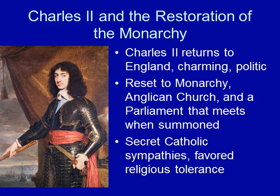This is Part B of Lesson 26: Charles II and the Restoration of the Monarchy. Charles II will return to England. He's going to be charming and politic, which basically means that he knows how to talk to people and get what he wants without upsetting them too much. He will rule over an England that will be reset to monarchy, with the Anglican Church back with the Episcopalian system and a Parliament that only meets when the king summons them — pretty much like it was before the Civil War.